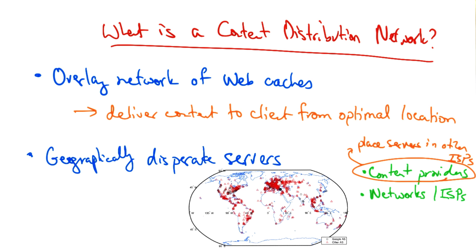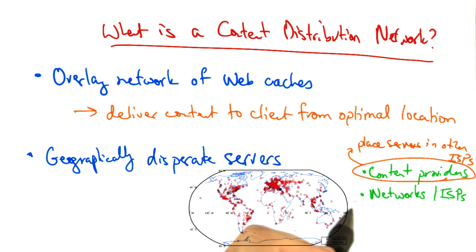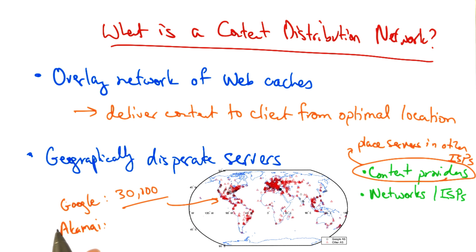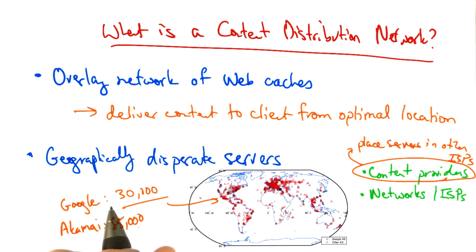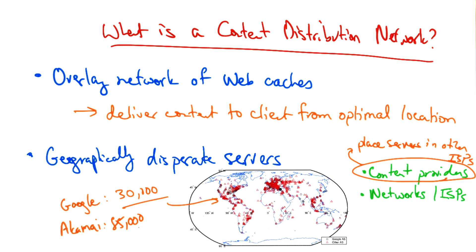The number of cache nodes in a large content distribution network can vary. For example, in the Google network, the USC researchers found that there were about 30,000 unique front-end cache nodes. As of about two years ago, the Akamai Edge platform reported about 85,000 unique caching servers in nearly 1,000 unique networks around the world, in 72 countries.